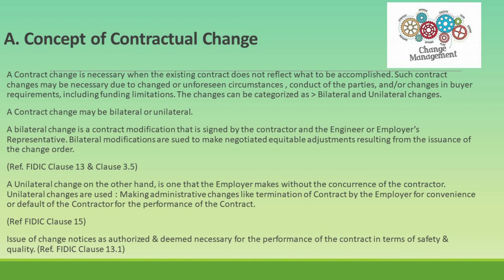FIDIC Clause 3.5 — Determinations — outlines the engineer's duty to consult with both parties to reach an agreement on any determination required under the contract. If an agreement cannot be reached, the engineer must make a fair determination based on the contract and all relevant circumstances. A unilateral change, on the other hand, is one that the employer makes without the contractor's concurrence. FIDIC Clause 15 — Termination by Employer — outlines circumstances under which the employer can terminate the contract, including failure to proceed with due diligence, insolvency, or substantial breaches of contract.